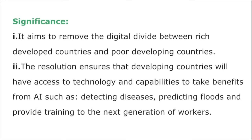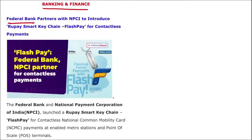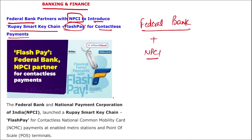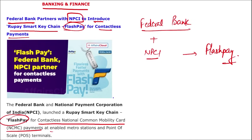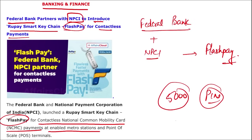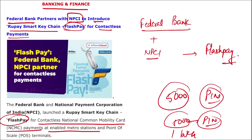Next, banking and finance: Federal Bank has partnered with NPCI to introduce the RuPay Smart Keychain Flash Pay for contactless payments. It was launched by Federal Bank in partnership with the National Payment Corporation of India. Flash Pay enables contactless National Common Mobility Card payments at enabled metro stations and POS terminals. Customers can make payments of up to ₹5,000 without a PIN, while above ₹5,000 a PIN is required. The daily transaction limit at POS devices is ₹1 lakh, with a tap-and-pay feature.